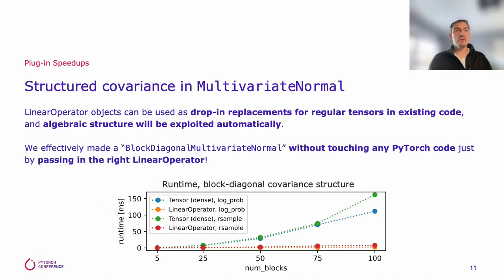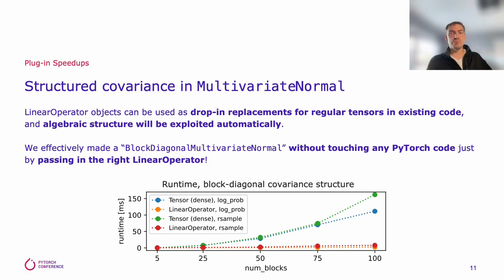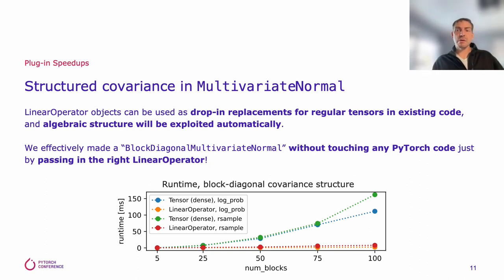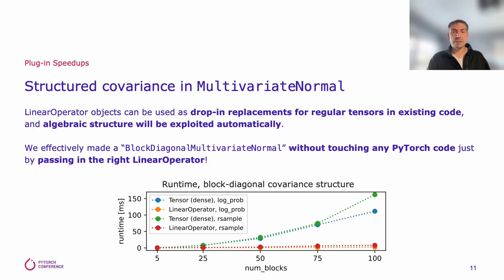Under the hood, the code calls torch.linalg.cholesky on the covariance matrix, which is a linear operator. So that call is dispatched to the specialized implementation for block diagonal matrices, which essentially computes a batch of num_blocks Cholesky decompositions and reassembles them, versus the naive method of computing Cholesky on the full large matrix. We get a nice quadratic speedup — O(num_blocks × n³) rather than O((num_blocks × n)³) — both for sampling and computing log probs. And this is executing unmodified core PyTorch code; the torch function dispatch and structure awareness of Linear Operator allow us to get those speedups.